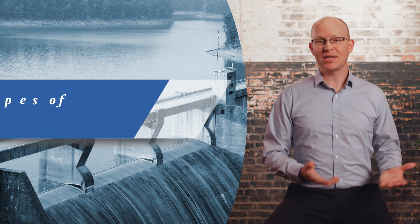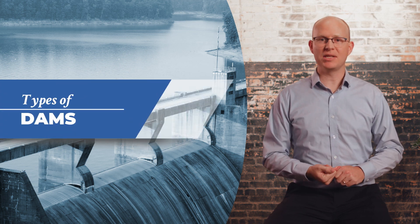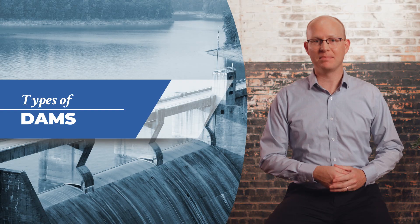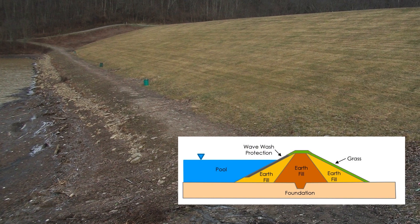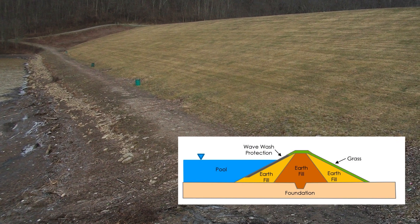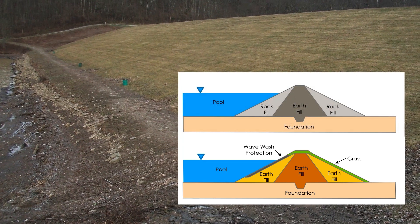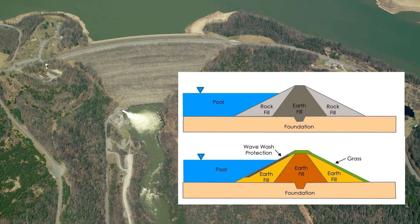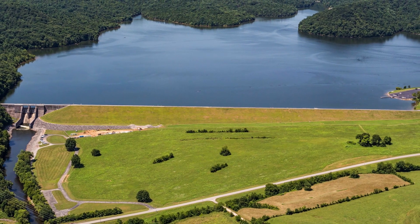There are several different types of dams. The most common type in use today is an embankment dam. An embankment dam is termed an earthfill or rockfill dam depending on whether it's comprised of compacted earth or rock. The ability of an embankment dam to resist the reservoir water pressure is primarily a result of the weight, type, and strength of materials from which the dam is made.